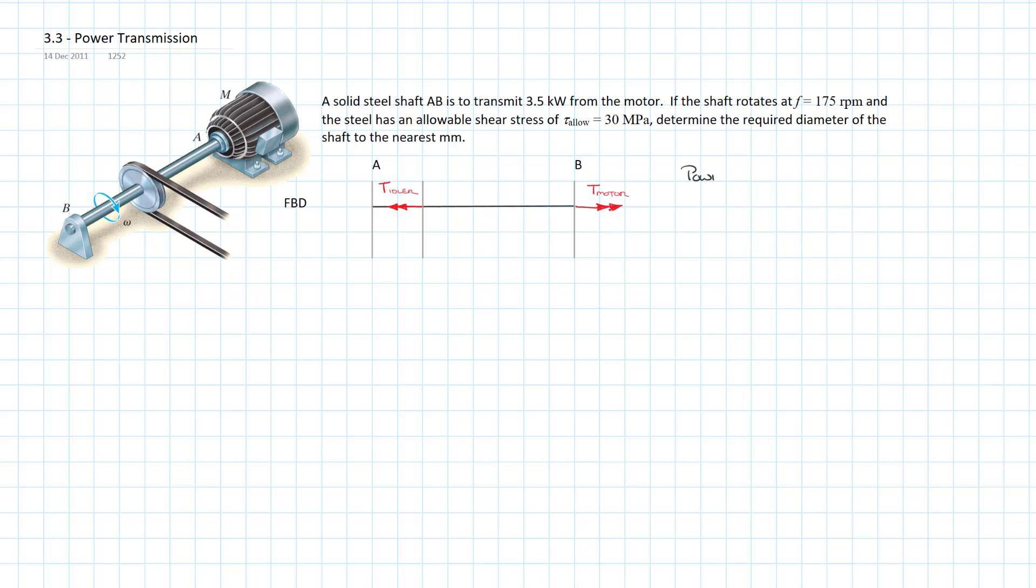So this is the extra step. We want to talk about the power at the motor. Before we can do that, we need to know what the angular rate of rotation is because it's given in RPM. 175 RPM is a frequency, so we need to take that 175 revolutions per minute and multiply by 2π radians per revolution and 1 minute per 60 seconds, and we end up with an angular rate of 18.33 radians per second.